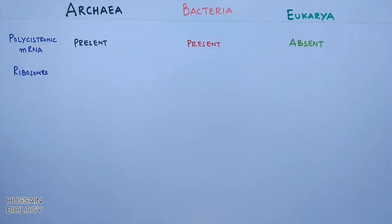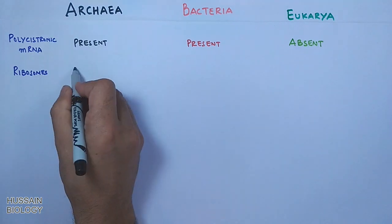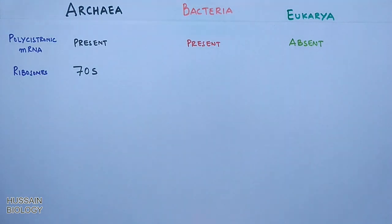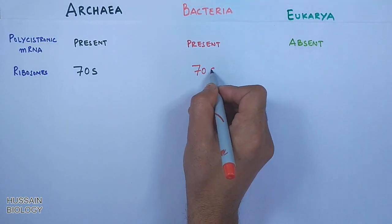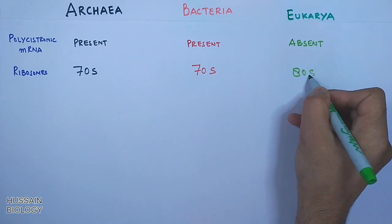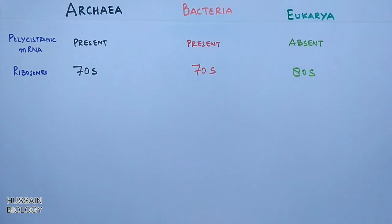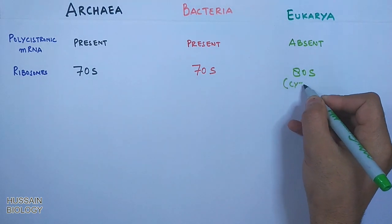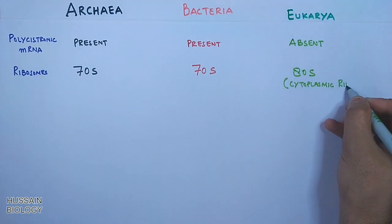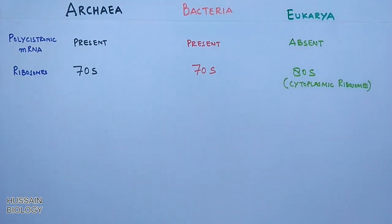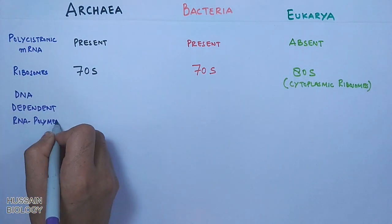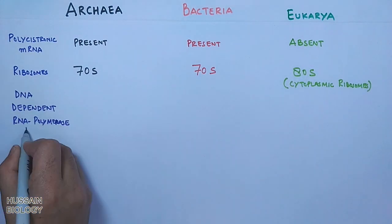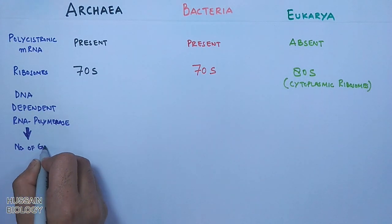Next, we compare the type of ribosomes. Both Archaea and Bacteria have 70S ribosomes, while Eukarya has 80S ribosomes — this applies to cytoplasmic ribosomes specifically.